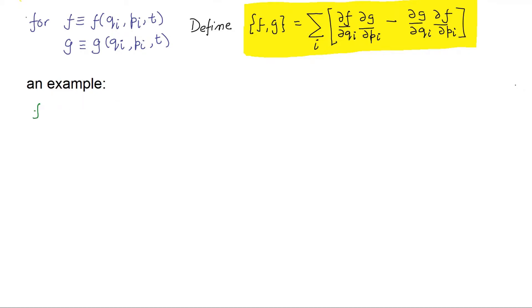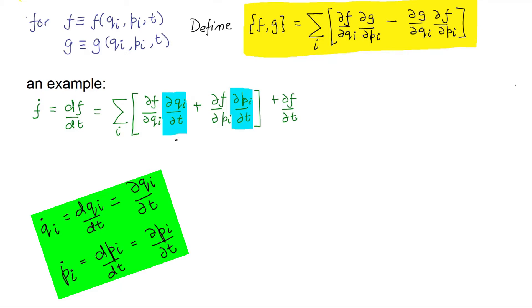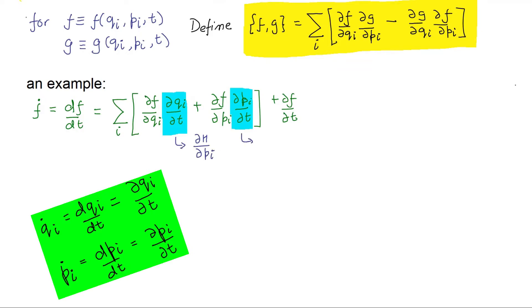As a first example of Poisson brackets in action, we look at the time evolution of the quantity F. Using the chain rule, we expand the total time derivative in terms of partial derivatives with respect to all phase space coordinates and time. We note that the partial time derivatives of Q and P are equivalent to their total time derivatives as both P and Q only depend on time. Substituting the values for Q dot and P dot from Hamilton's equations,